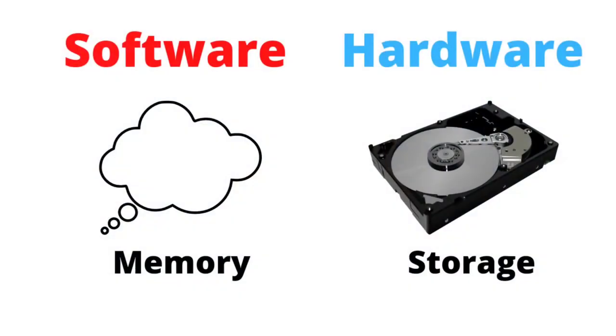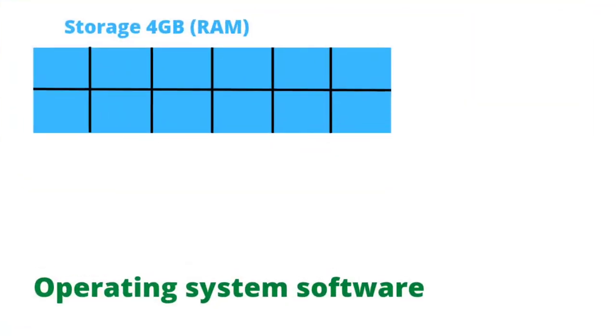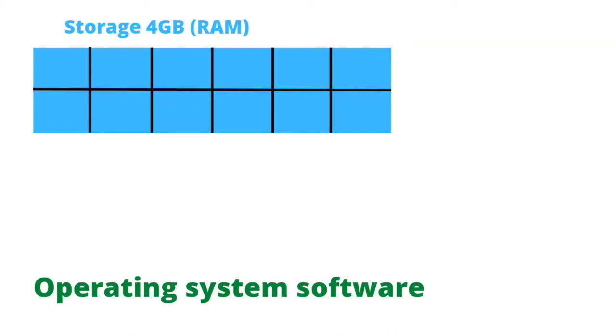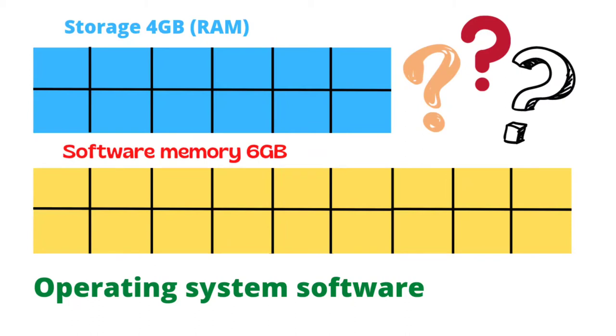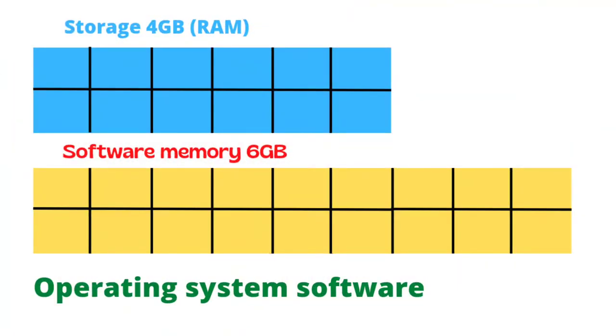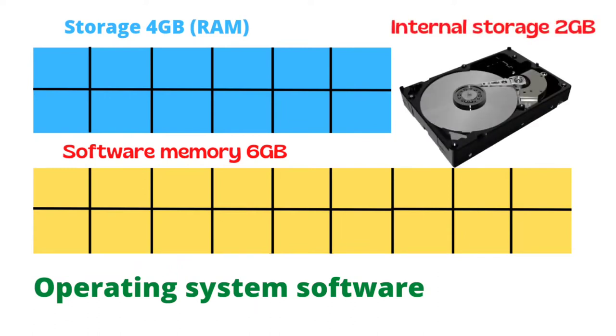Software must be supported by hardware — that's how it works. So RAM extension or virtual memory extension means the operating system is coded to create extra RAM beyond the physical hardware. If a phone has 4GB of RAM and the OS creates 6GB of virtual memory, 4GB goes to the RAM. The extra 2GB of virtual memory must also be supported by hardware, so it gets mapped onto another type of memory hardware — usually your internal storage.